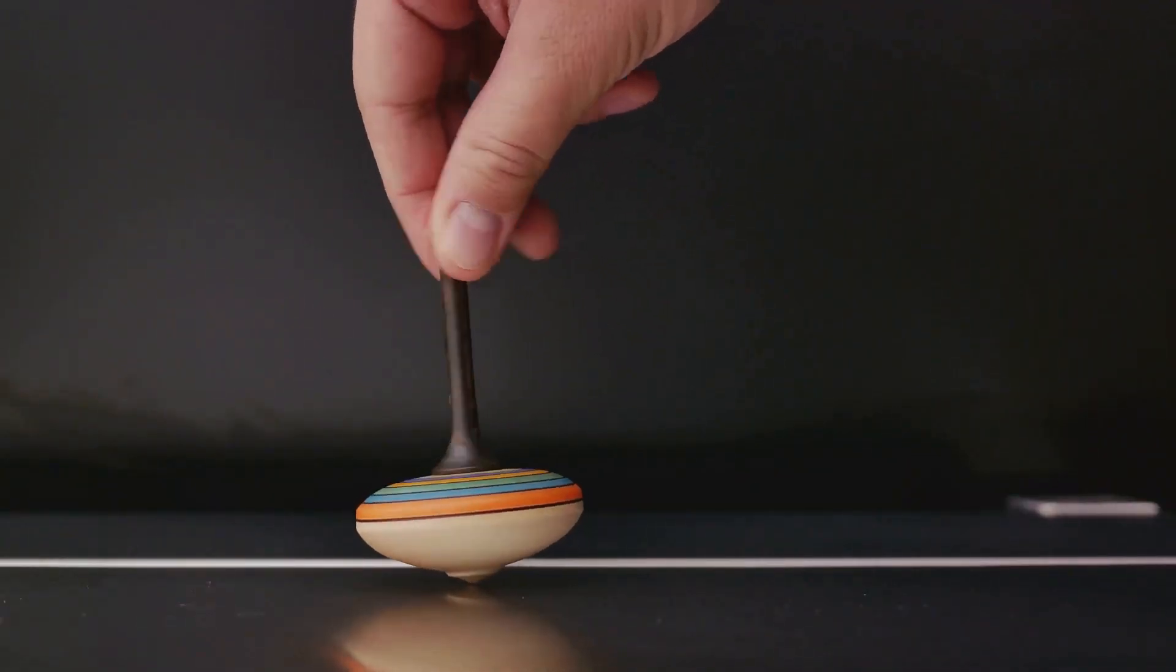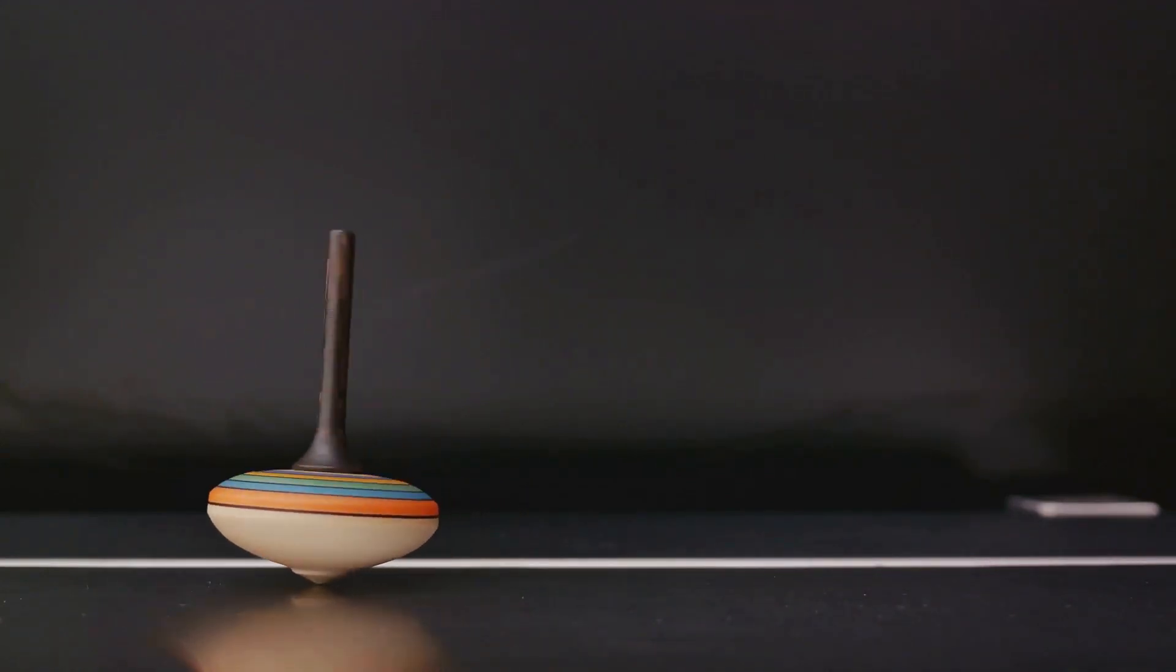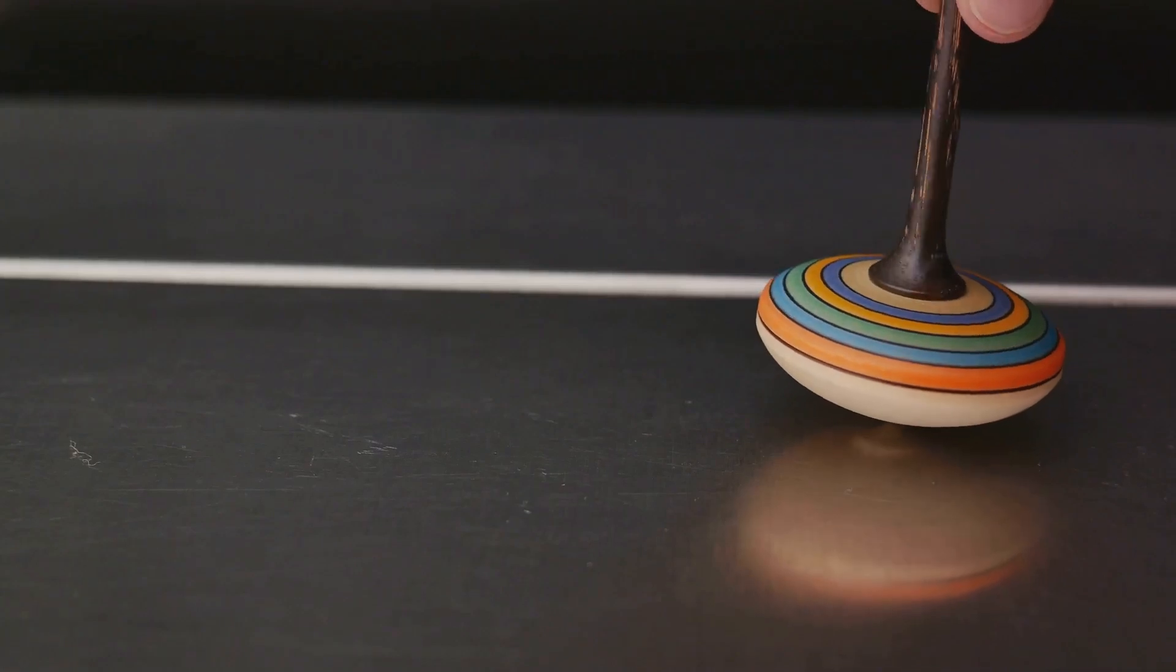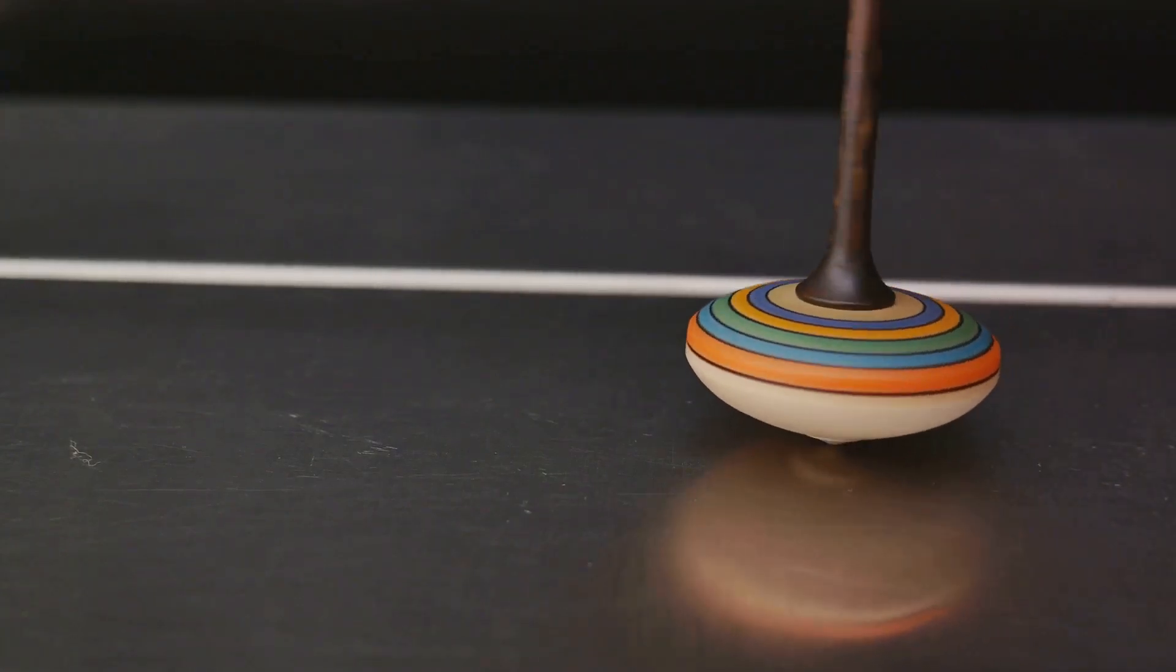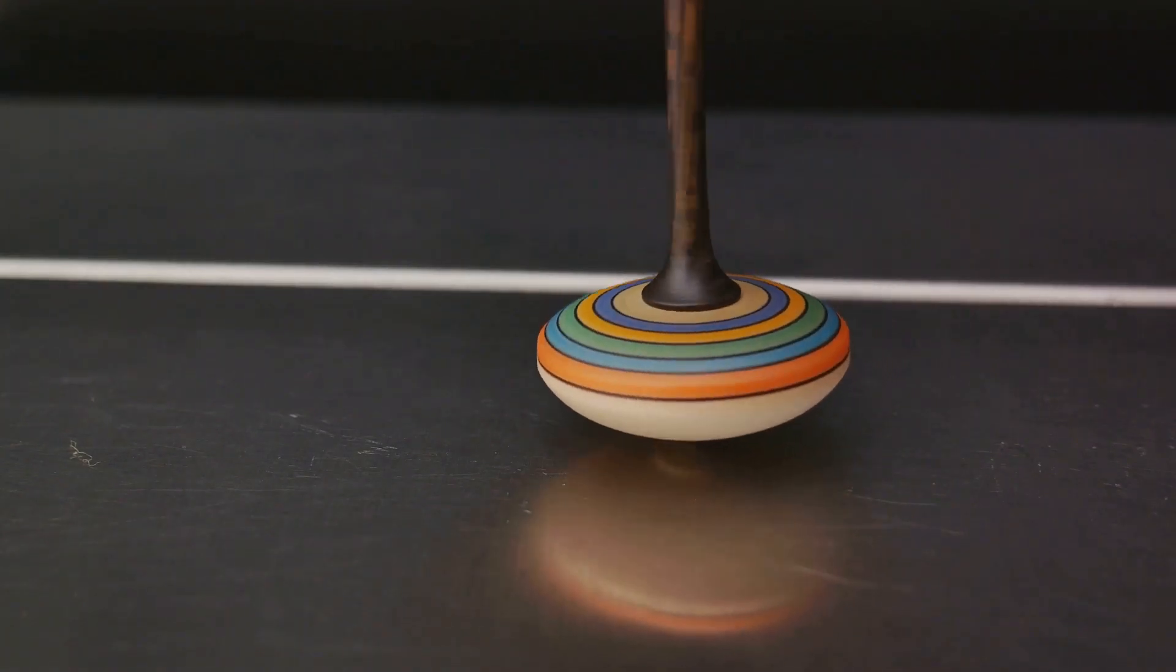To illustrate this, imagine a spinning top. In the classical world, it can either spin clockwise or counterclockwise. But if that top were a quantum particle, it could spin both ways at the same time. In fact, it could spin in an infinite number of ways at once, each with its own probability.